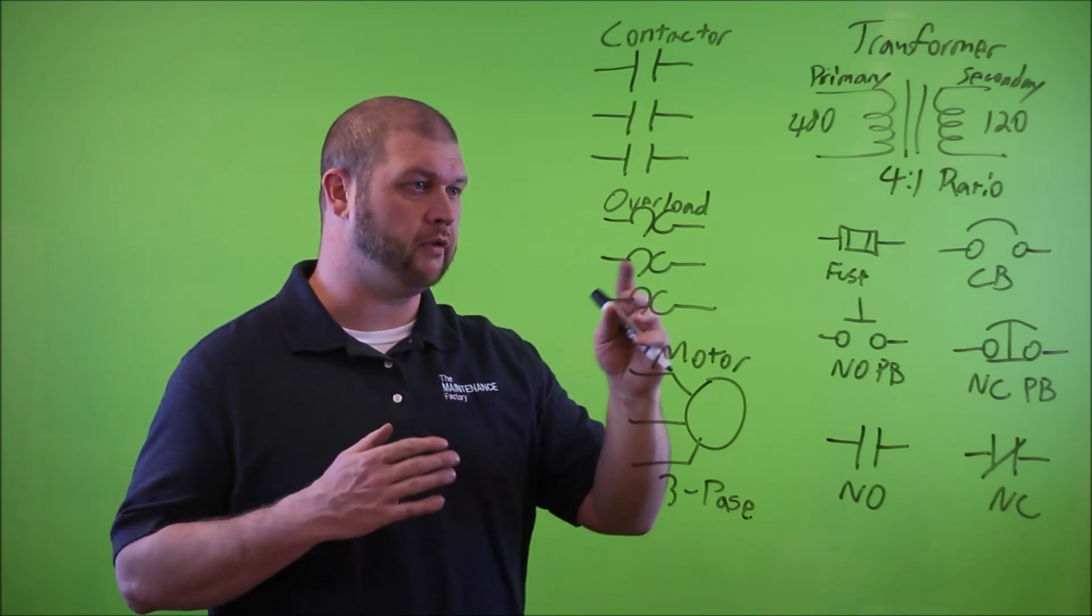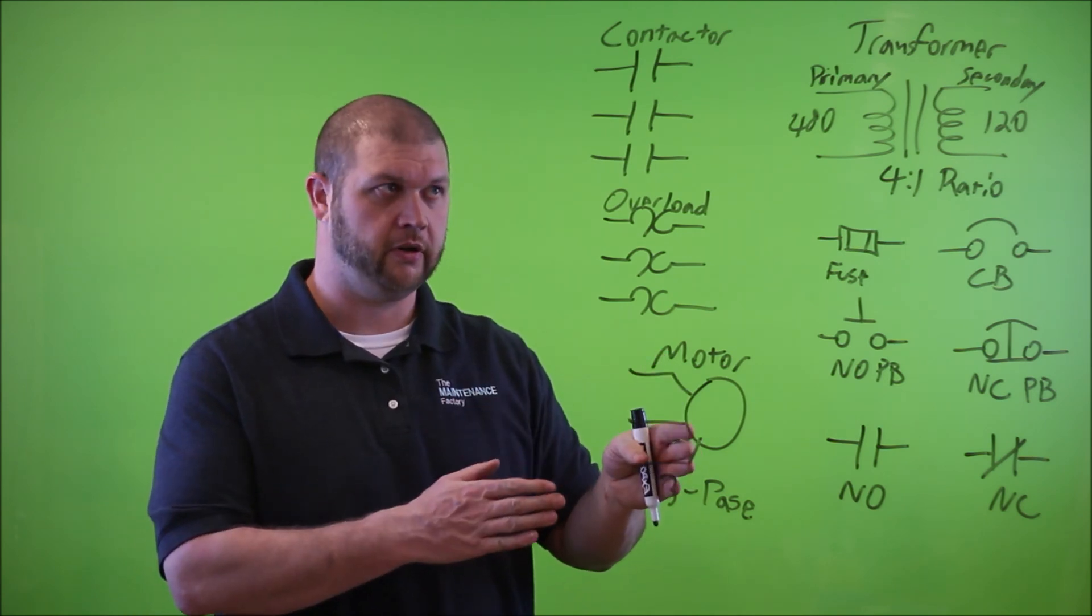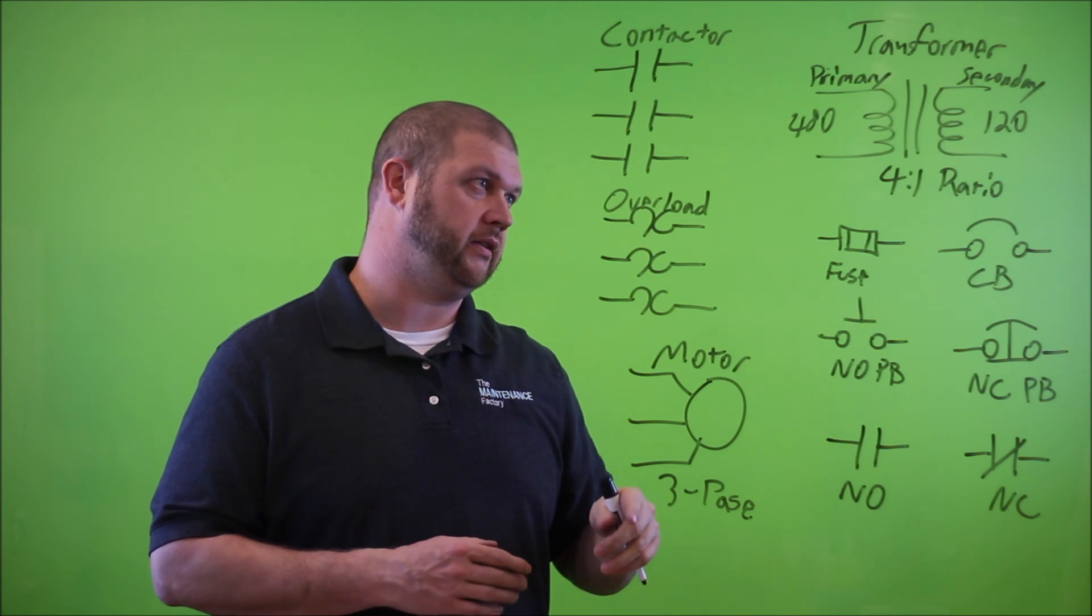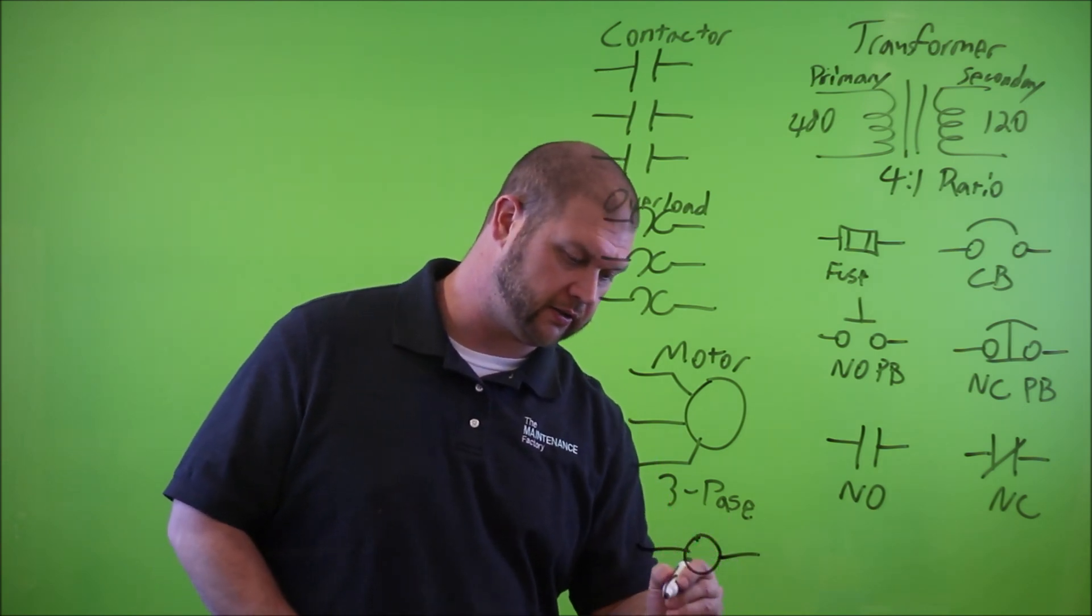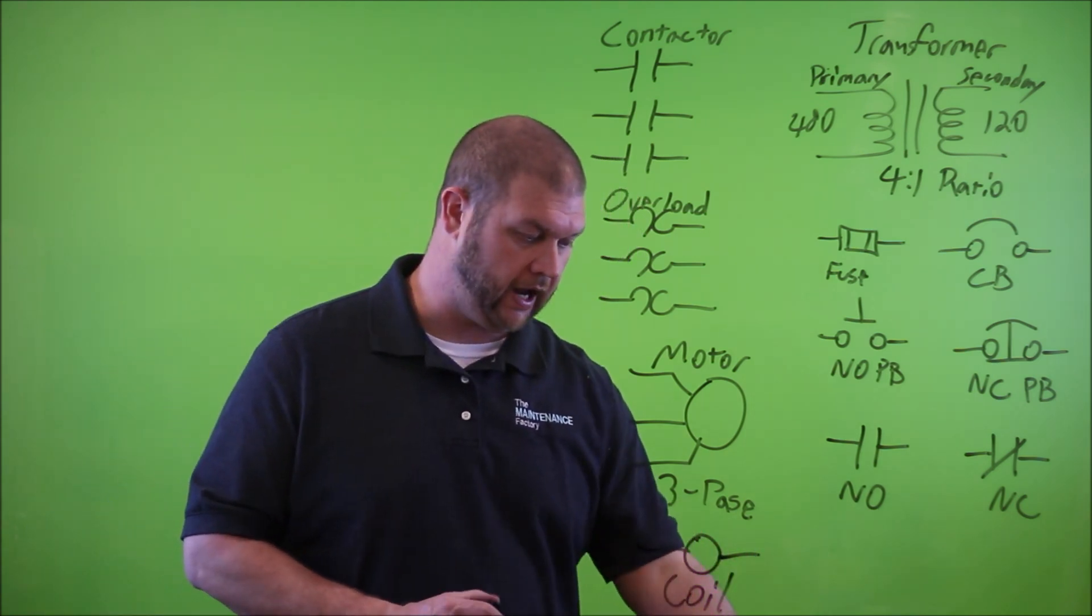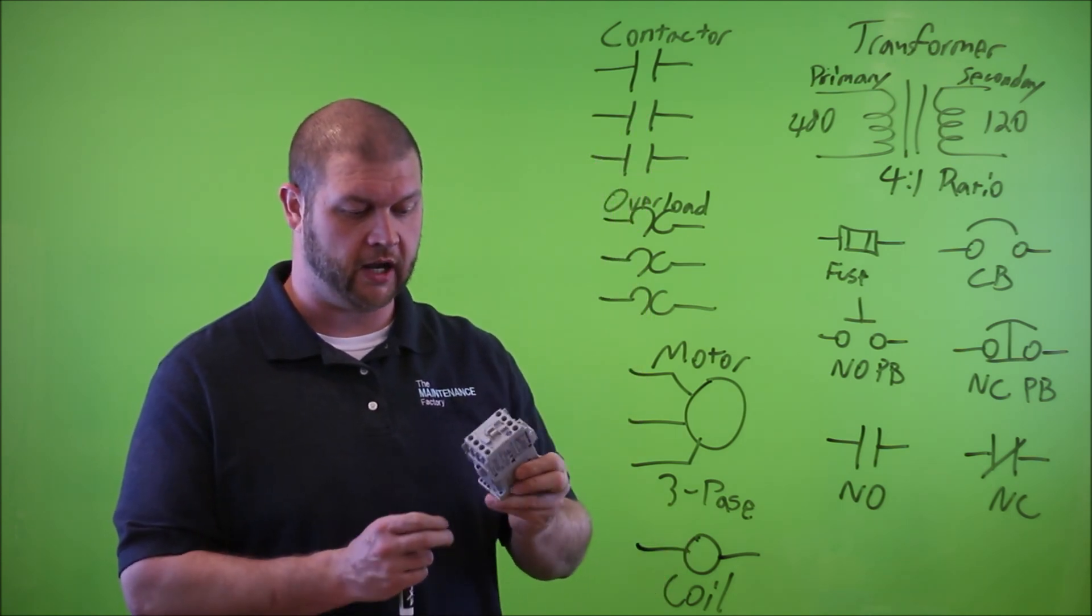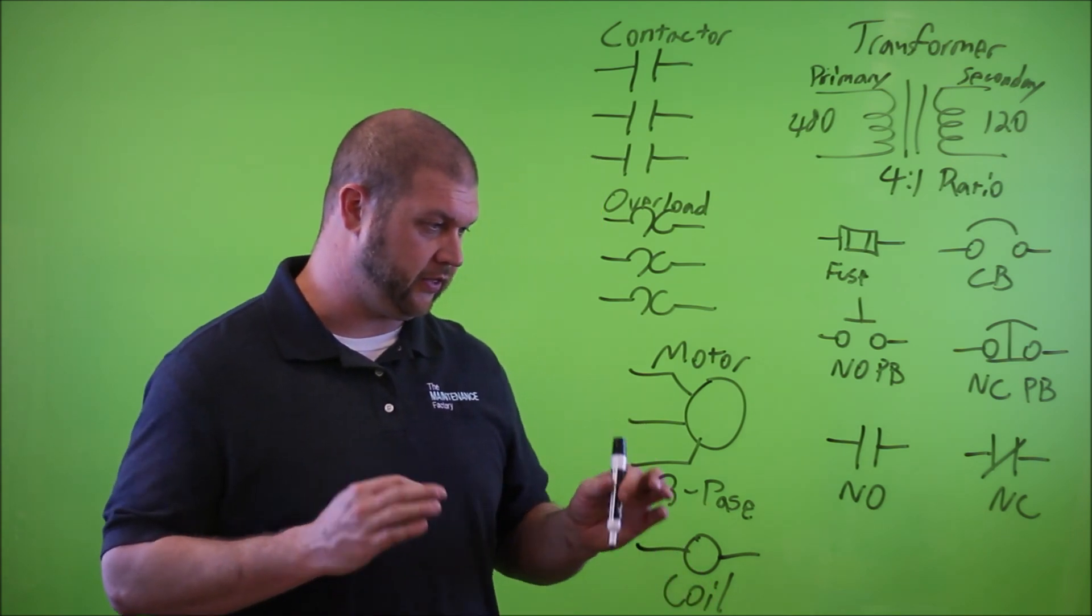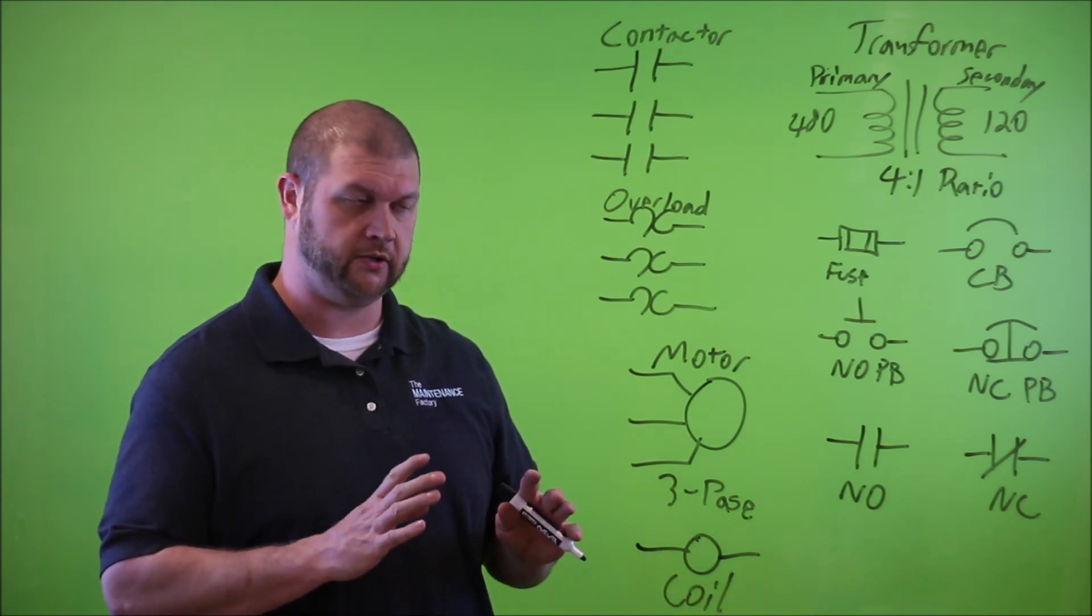We have a three phase motor, three phase overload, three phase contactor. The overload provides circuit protection similar to the fuses and circuit breaker to the motor, and the contactor provides power to the motor. That happens when the coil is energized. A coil looks like this and the coil is actually inside of a contactor. Here's a three phase contactor - there's a coil inside of it and it makes it actuate.